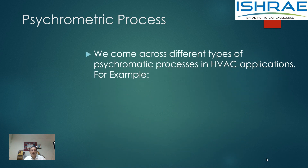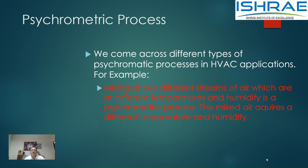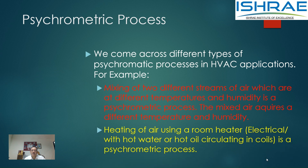In air conditioning and HVAC applications, we come across many different kinds of psychrometric processes. Mixing of two different streams of air which are at different temperatures and humidity levels is a psychrometric process. The mixed air acquires a different temperature and humidity — this is a psychrometric process.